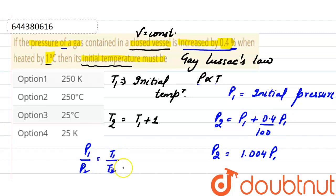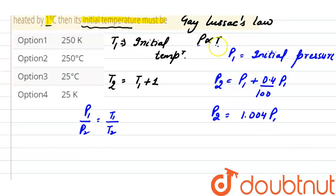Put the values here: initial pressure is P1, final pressure here is 1.004 of P1, equals to T1, and final temperature here is T1 plus 1. This P1 and this P1 cancel out each other.